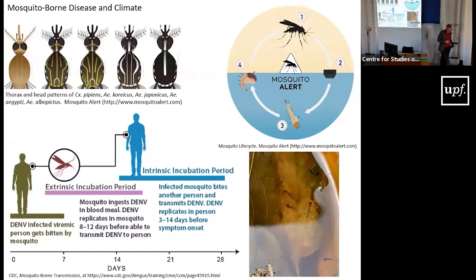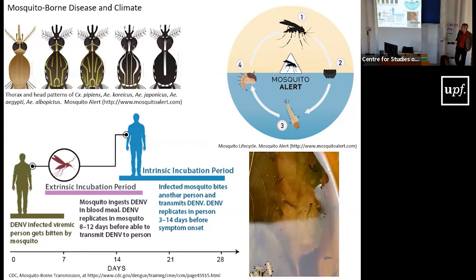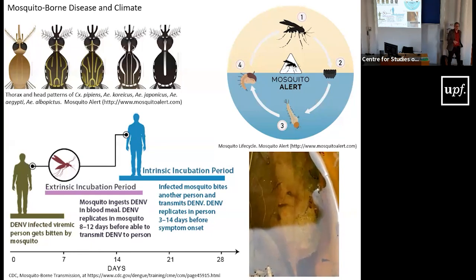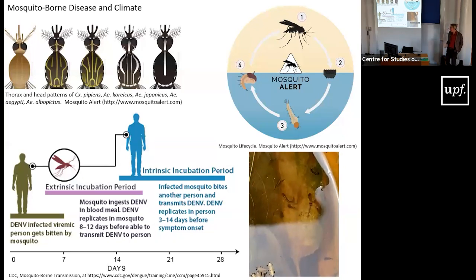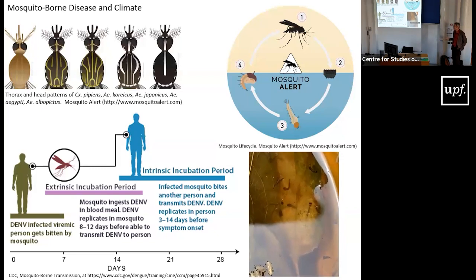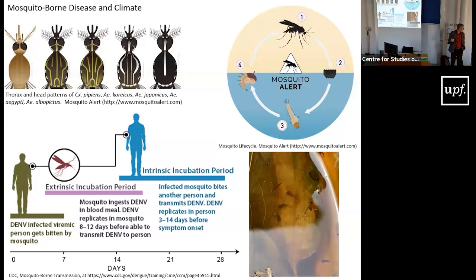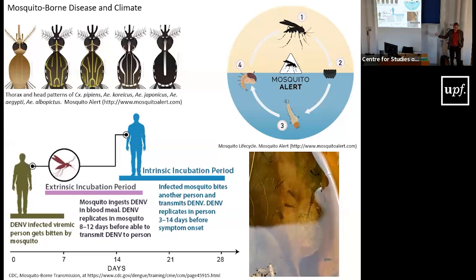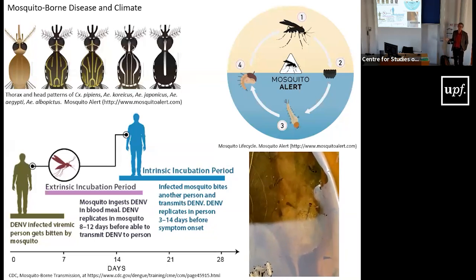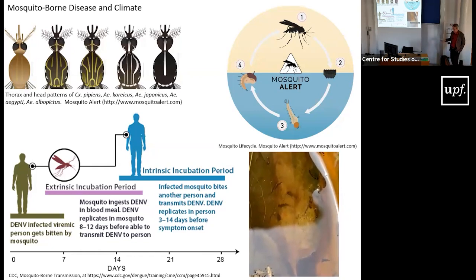Mosquito-borne diseases are transmitted by mosquitoes that serve as vectors moving disease between people. In the simplest case, something like the dengue virus, you have an infected person who gets bitten by a mosquito. There's an incubation period during which the virus multiplies and replicates inside the mosquito. The mosquito then bites another person, transmitting the virus to somebody new. If that person is susceptible, after their incubation period they become infected and can transmit it to another mosquito. There are more complicated patterns, such as West Nile, where birds, horses, and other animals are also involved in the transmission chain.